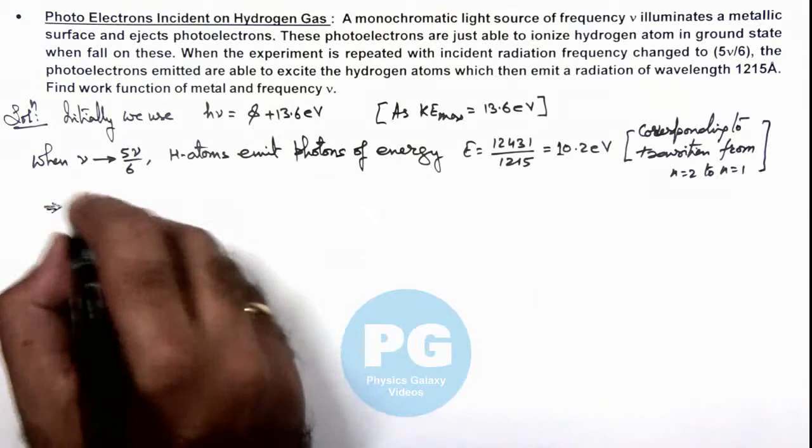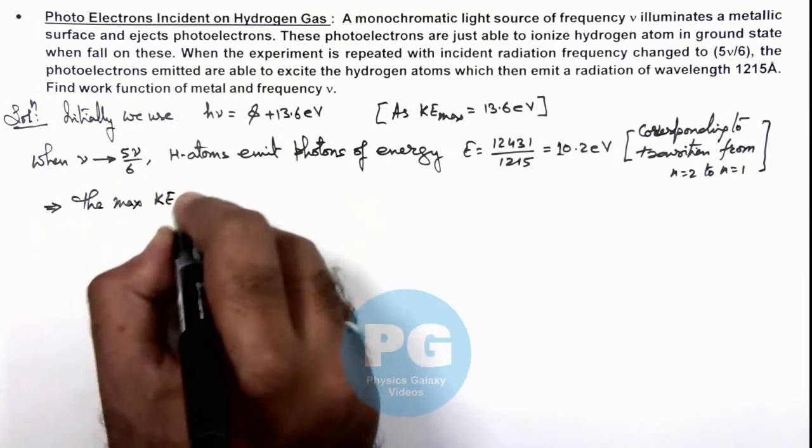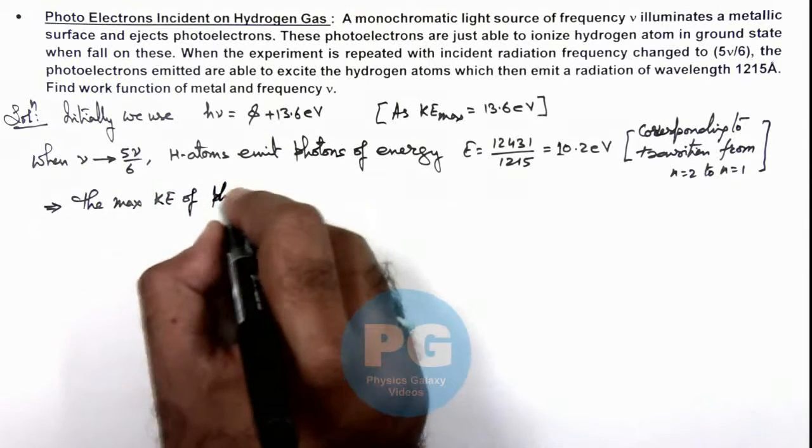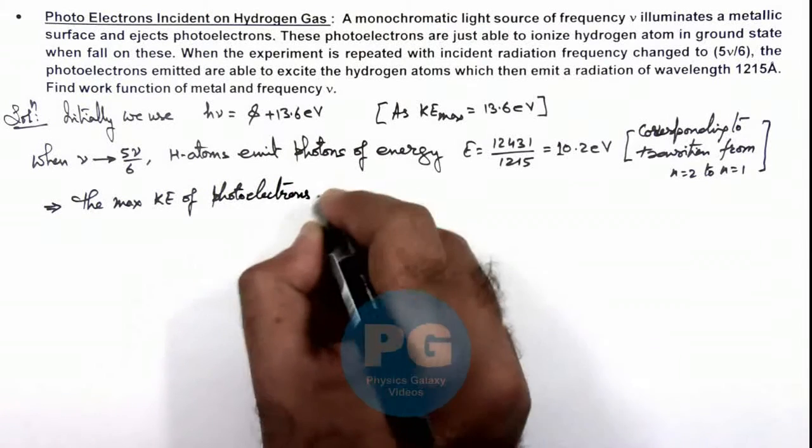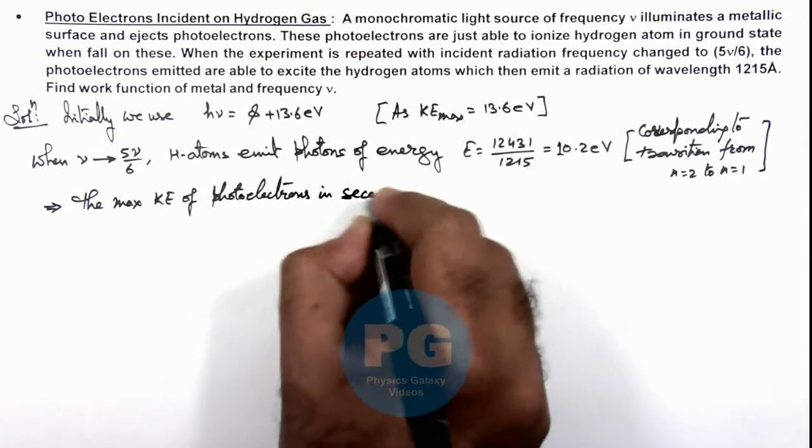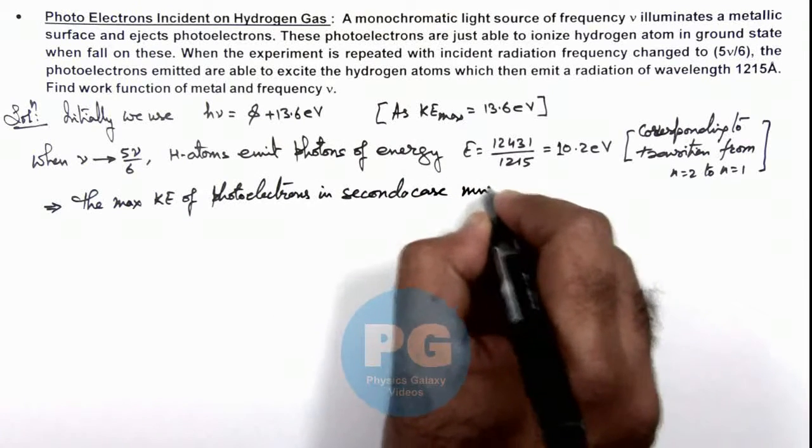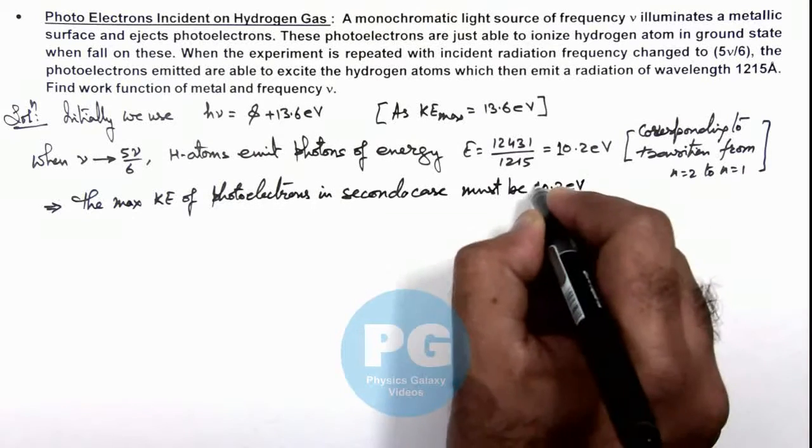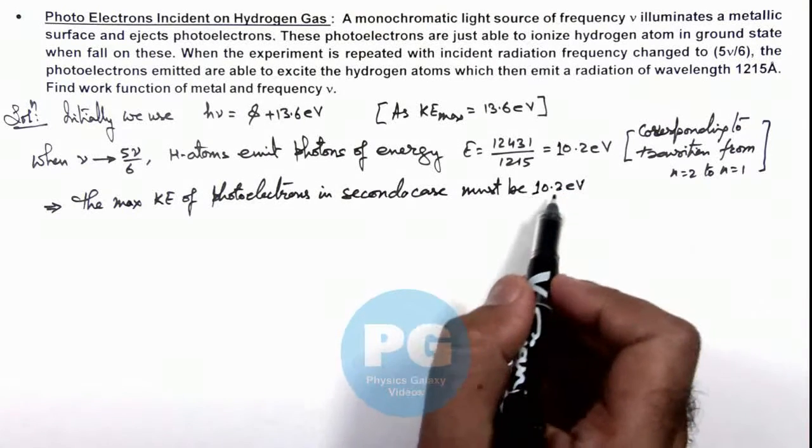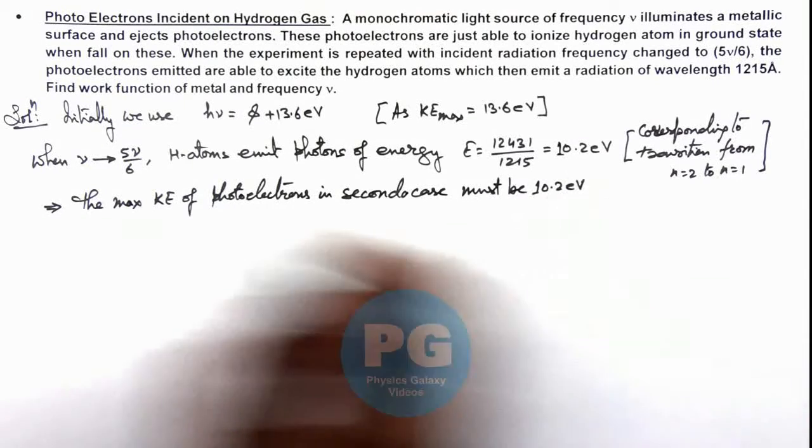So this implies the maximum kinetic energy of photoelectrons in second case must be 10.2 electron volts, so that hydrogen atoms will excite from 1 to 2 and then emit this radiation.